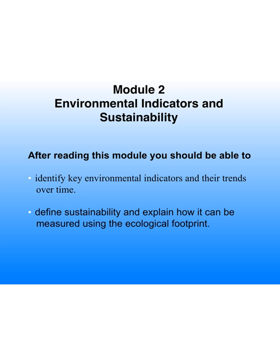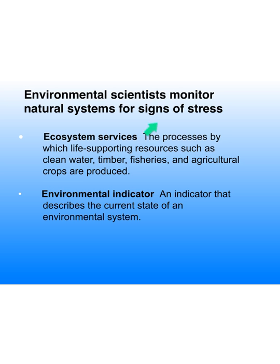Now we're going to look at environmental indicators and sustainability. Very important — you're going to see me talk about ecosystem services all year long. Ecosystem services are the processes by which life-supporting resources such as clean water, timber, fisheries, and agricultural crops are produced. Things like flood control from mangrove trees and wetlands are also ecosystem services — they take the place of us having to build a seawall. They save humans the effort and provide a very important service. If you take any medications, at some point they probably came from some sort of plant.